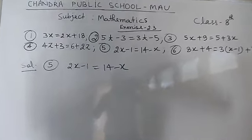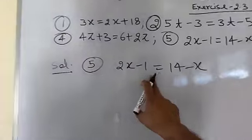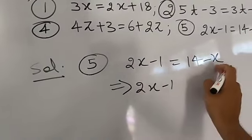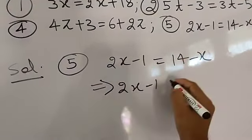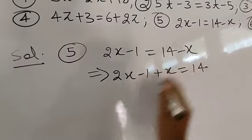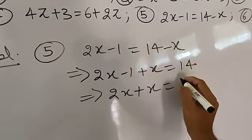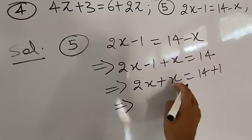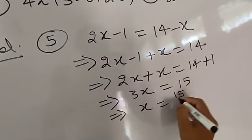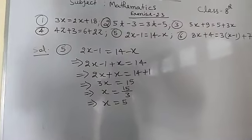Here I have written question number 5: 2x minus 1 equal to 14 minus x. Send the variable term to one side: 2x minus 1, and transferring minus x to the left gives plus x, equal to 14. Then send minus 1 to the right side, giving 2x plus x equal to 14 plus 1. That is 3x equal to 15, so x equal to 15 by 3, which gives x equal to 5.